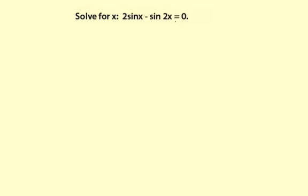For the sine of 2x, I'm going to apply the double angle formula for sine. So it's going to be 2 sine of x minus 2 sine of x cosine of x equals 0.